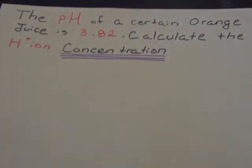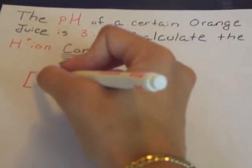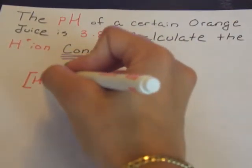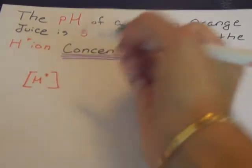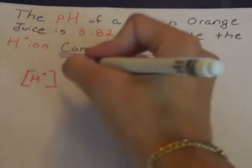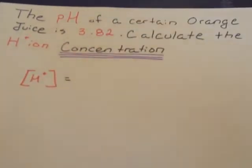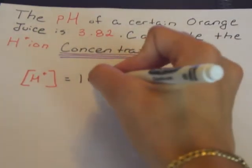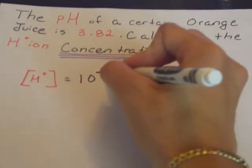But they want us to find the concentration of the H ion. So we need to know the equation for pH and finding concentration. So for that, the equation to find the concentration is the concentration of H ion equals 10 to the negative pH.